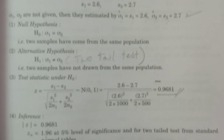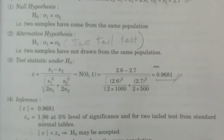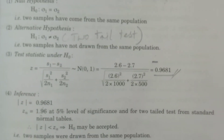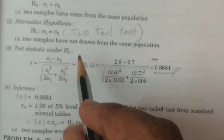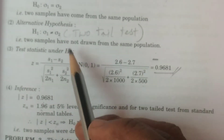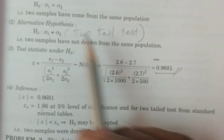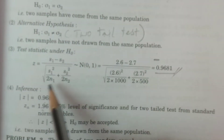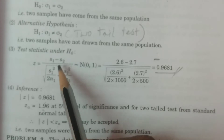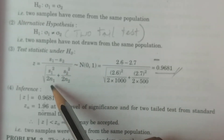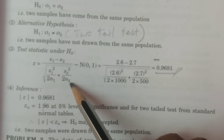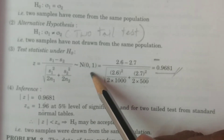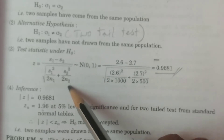Third point: test statistic under H0. Since population standard deviations are not known, the formula is: Z equals (S1 minus S2) divided by the square root of (S1 squared over 2N1 plus S2 squared over 2N2). This follows N(0,1). This is the sigma 1, sigma 2 not known case.